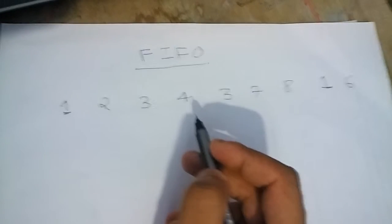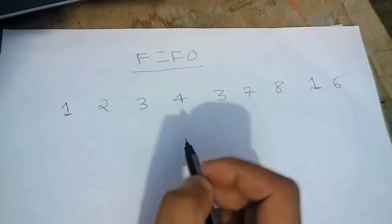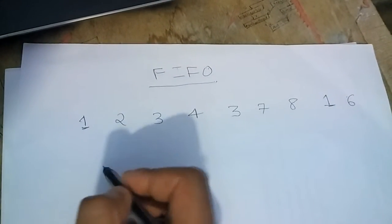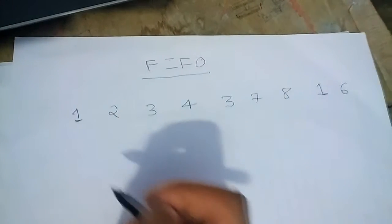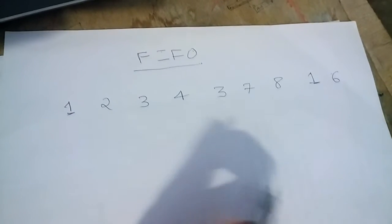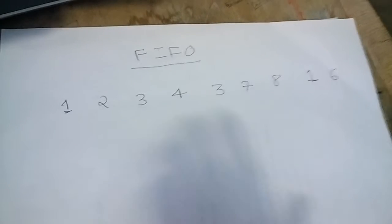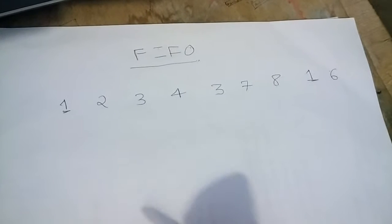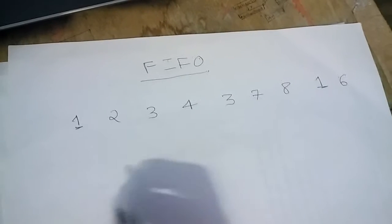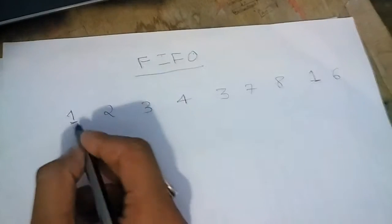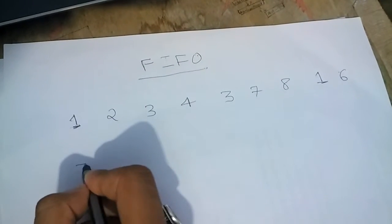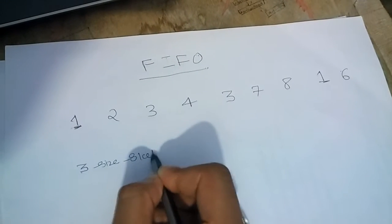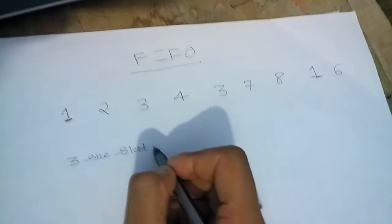So first in first out scheduling. First we have given a frame size. The frame size may be of 3 slots. That means at a particular time we can keep 3 processes. It may be of 4 slots, that we can keep 4 processes. So let's say we have 3 size slots given to a particular process.